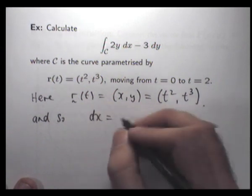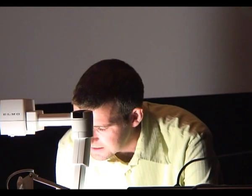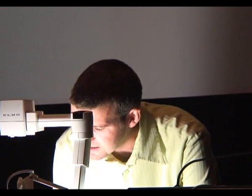So dx is going to be 2t dt, dy is going to be 3t squared dt and then we just substitute it into our line integral.